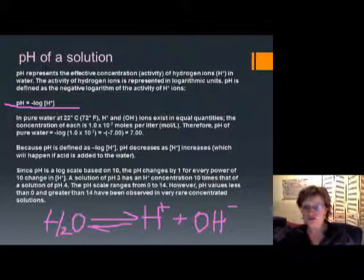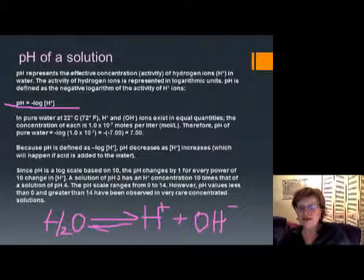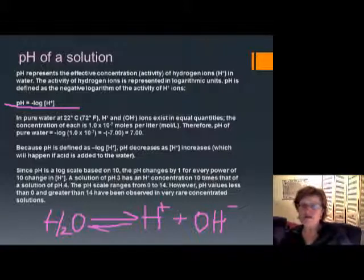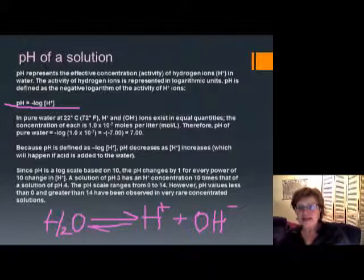If we measure the hydrogen ion concentration in pure neutral water, it's going to be 10 to the minus 7. Similarly, the concentration of the hydronium ion is also 10 to the minus 7. Now if we take the negative logarithm of 10 to the minus 7, we get 7. So pure neutral water will have a pH of 7.